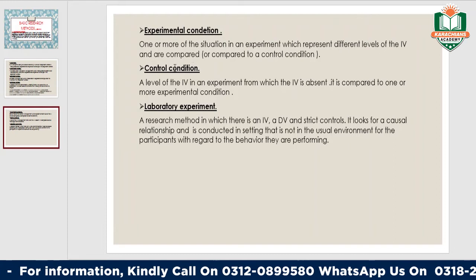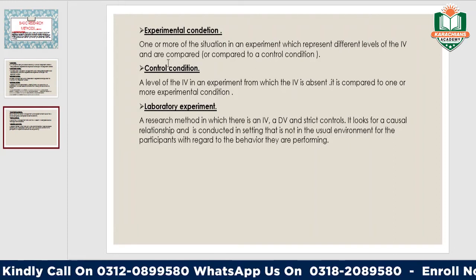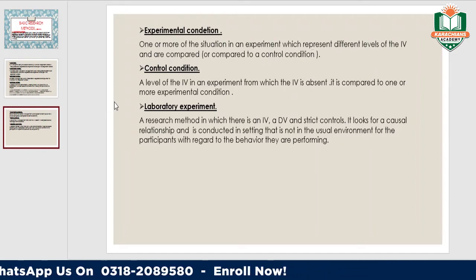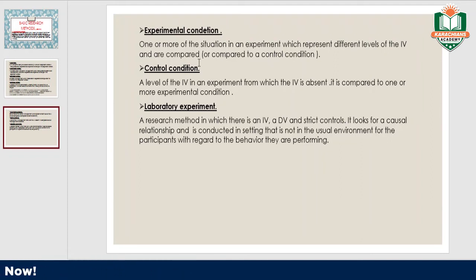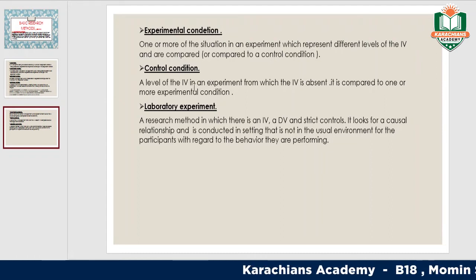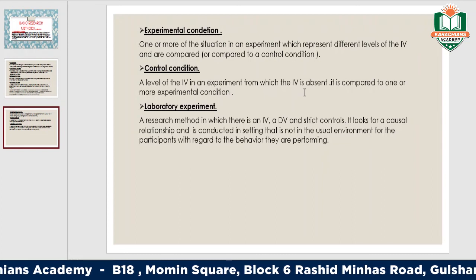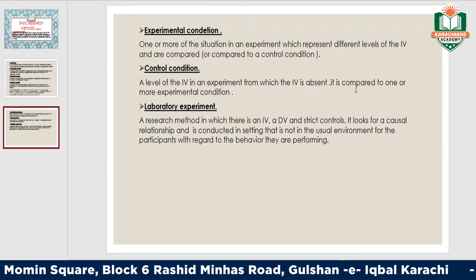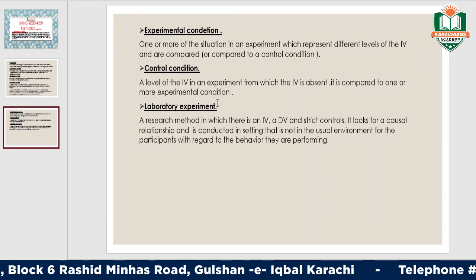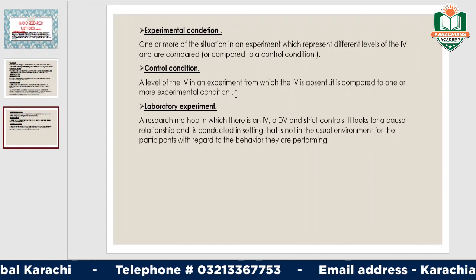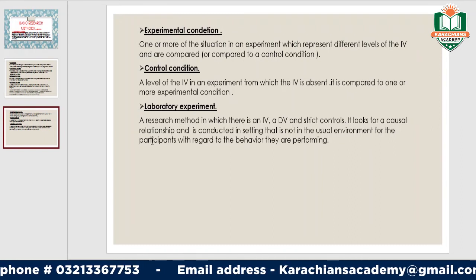The experimental condition is one or more situations in an experiment which represents different levels of the independent variable, and is compared to the control condition. The control condition is a level of the independent variable in an experiment from which the independent variable is absent — it is compared to one or more experimental conditions.